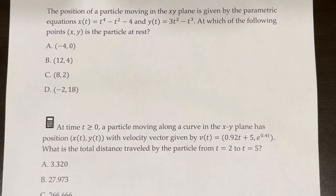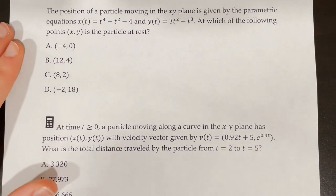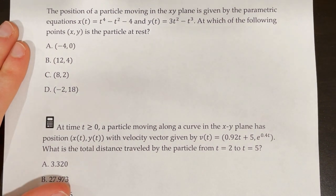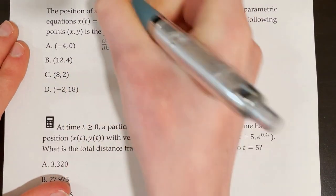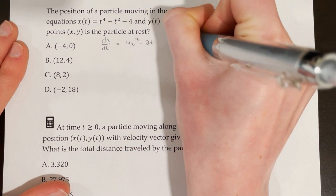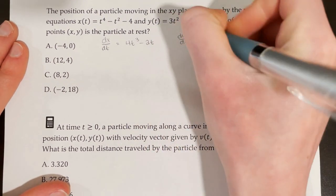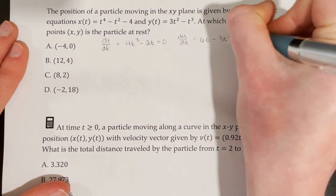The position of a particle is given by x of t equals t⁴ − t² − 4 and y of t equals 3t² − t³. At which point (x, y) is the particle at rest? We need dx/dt and dy/dt both equal to 0. dx/dt equals 4t³ − 2t, which factors as 2t(2t² − 1) = 0, giving t = 0 or t = ±√(1/2). dy/dt equals 6t − 3t², which factors as 3t(2 − t) = 0, giving t = 0 or t = 2.